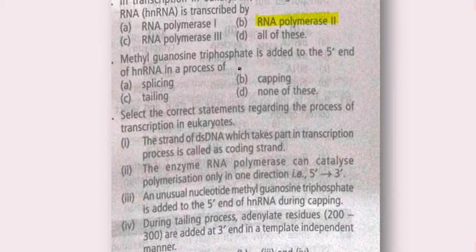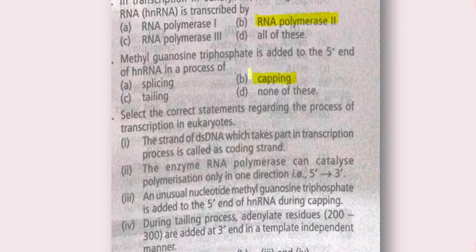Next question: methyl guanosine triphosphate is added to the 5' end of hnRNA in a process called capping. In tailing, adenylate residues are added to the 3' end of hnRNA.